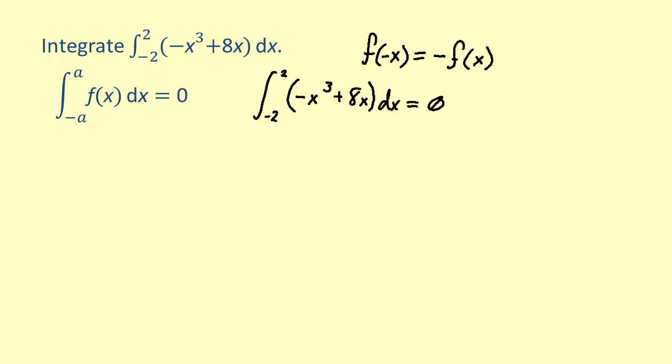Instead of just believing this is true, let's show that this integral is equal to zero by solving it without using the odd function rule. Integrating, we get the quantity negative x to the fourth over four plus 4x squared, and we have to evaluate that from negative 2 to 2.